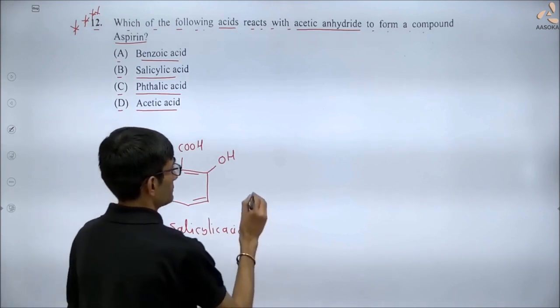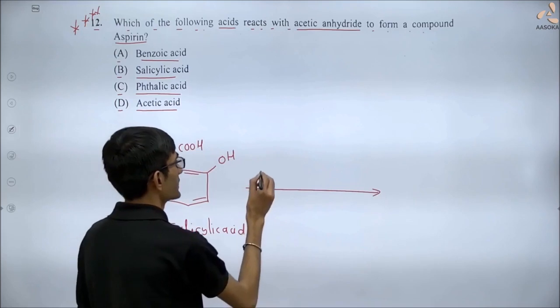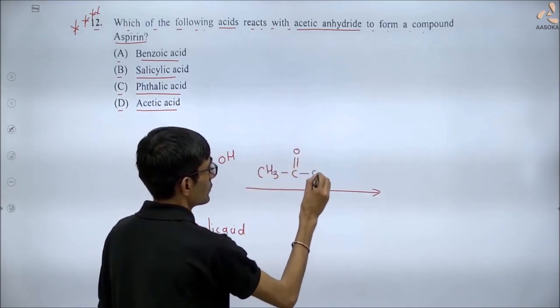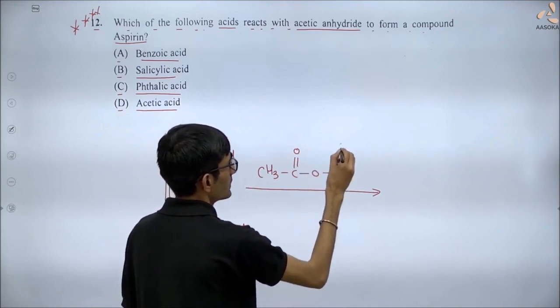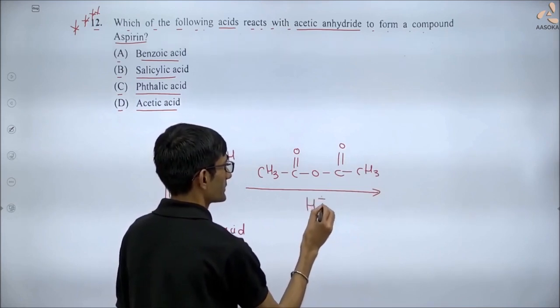Now its reaction with acetic anhydride. Acetic anhydride's formula is CH3-C=O-O-C=O-CH3. The reaction occurs in presence of acid, H+.